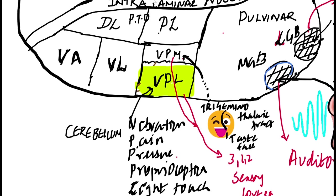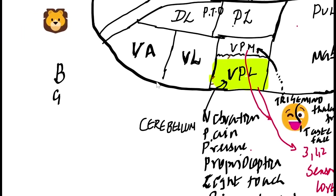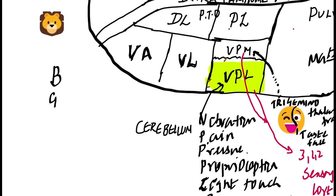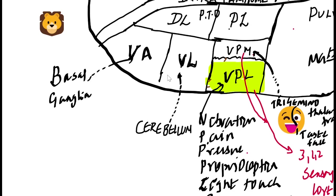Let's do ventrolateral. The afferent is from the cerebellum. The ventrolateral connects to the basal ganglia. What is the main function? Motor.